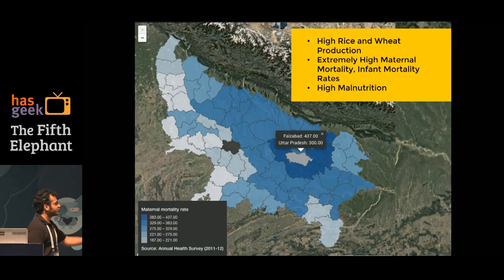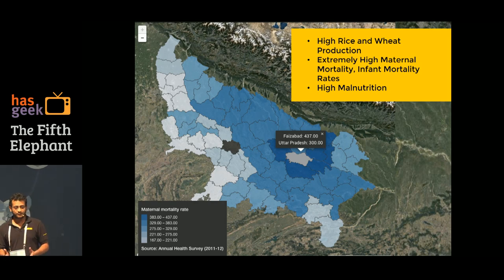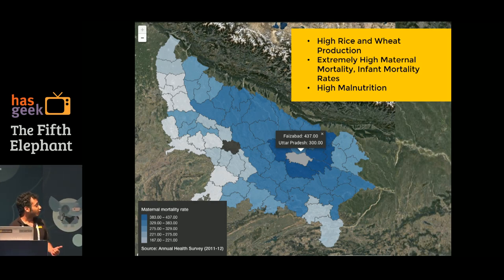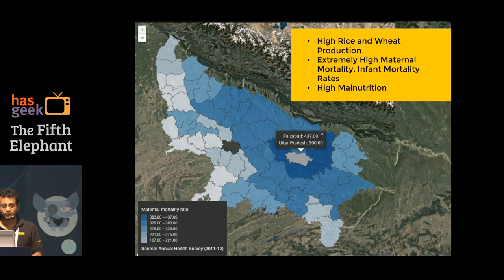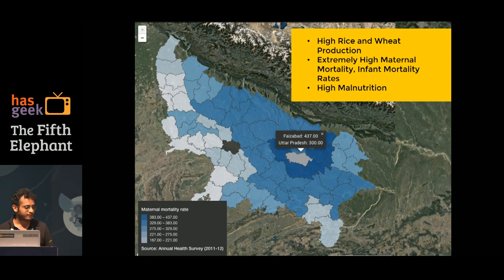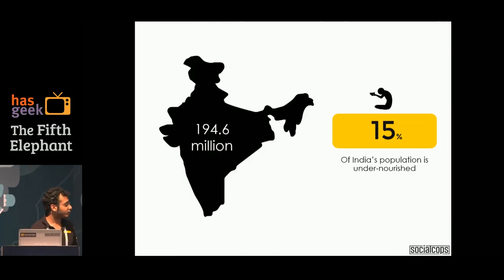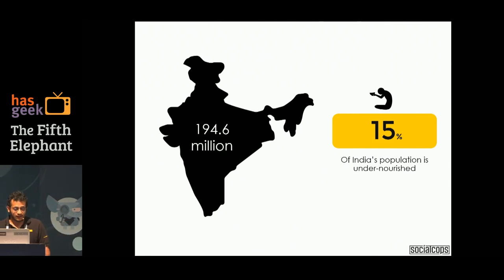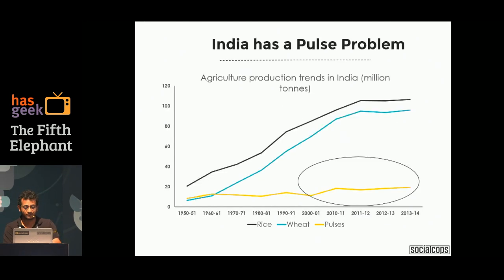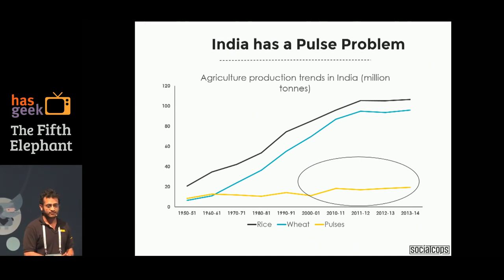This is a district in Uttar Pradesh called Faizabad. It has high production of rice and wheat, which are the basic staple food crops in India, but it also has extremely high maternal mortality rate and infant mortality rate. Imagine a girl named Pramila living in this district — her family is a rural agriculture family which produces surplus amounts of wheat and rice to sustain the family, but still she is undernourished, like the 194.6 million people in India who are undernourished. India is actually home to the largest undernourished population in the world.